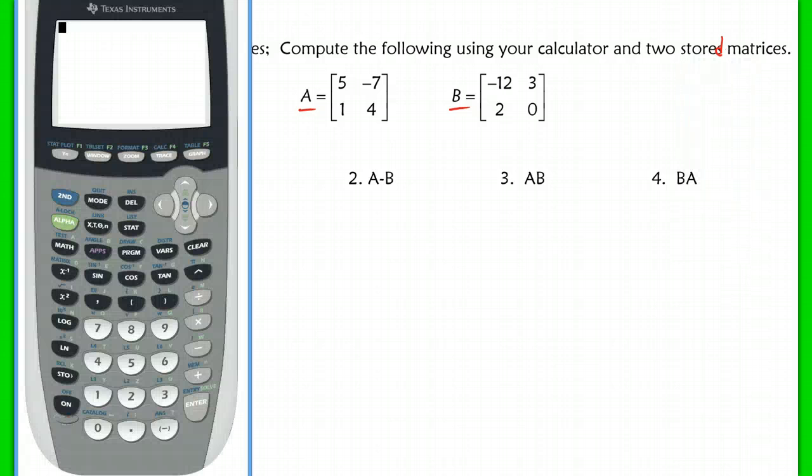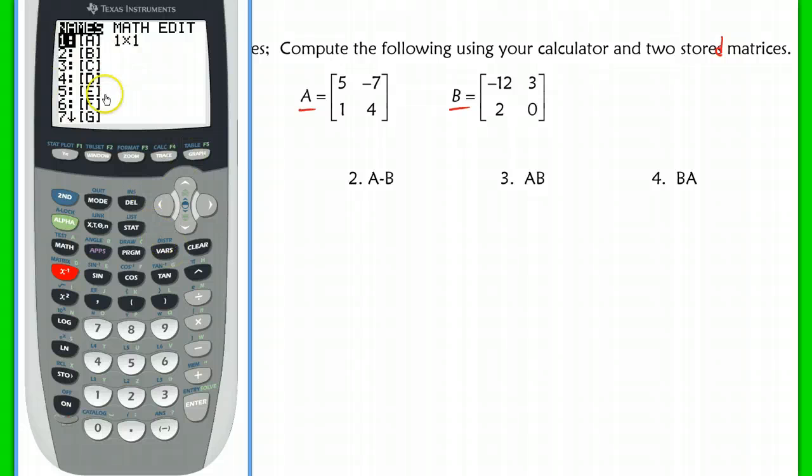Okay, what you're going to do is you're going to hit second matrix, which is right above this X to the negative first key. So second matrix pulls up this menu here and this is the name of each matrix, so A, B, C through, you know, you can name it anything you want. But we're going to edit our matrix so that we can actually input these specific values into our matrix. So I'm going to scroll over to edit and hit enter on here.